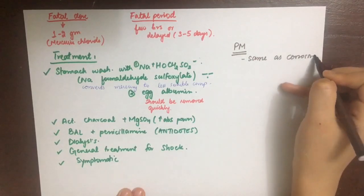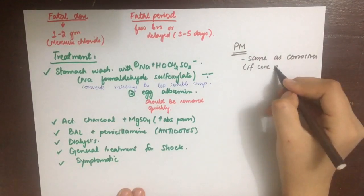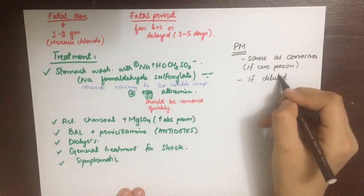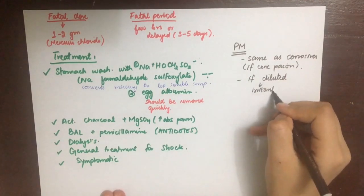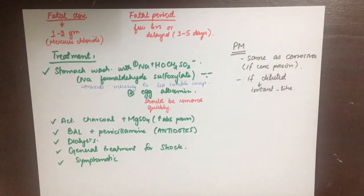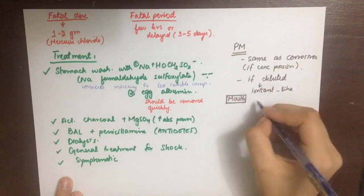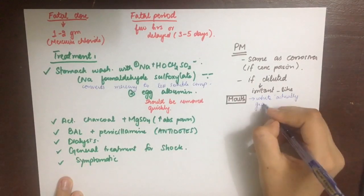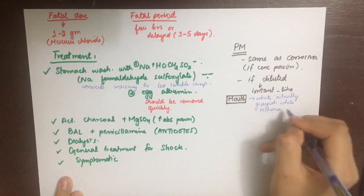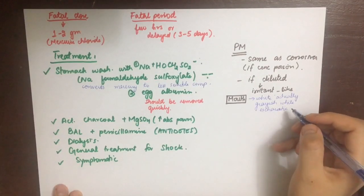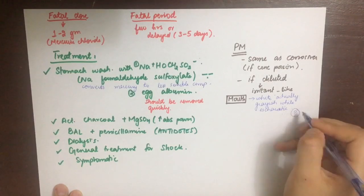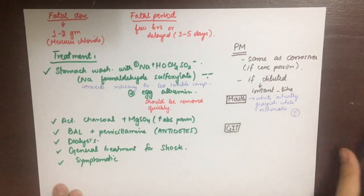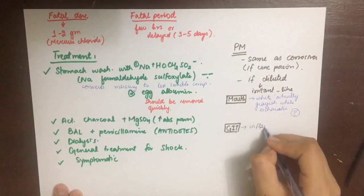On post-mortem appearances, findings are the same as those of a corrosive poison if concentrated form was taken, or irritant poison findings if diluted form was taken. The mouth will show a grayish-white escharotic appearance. The GIT will be inflamed and the mucous membrane will be corroded.